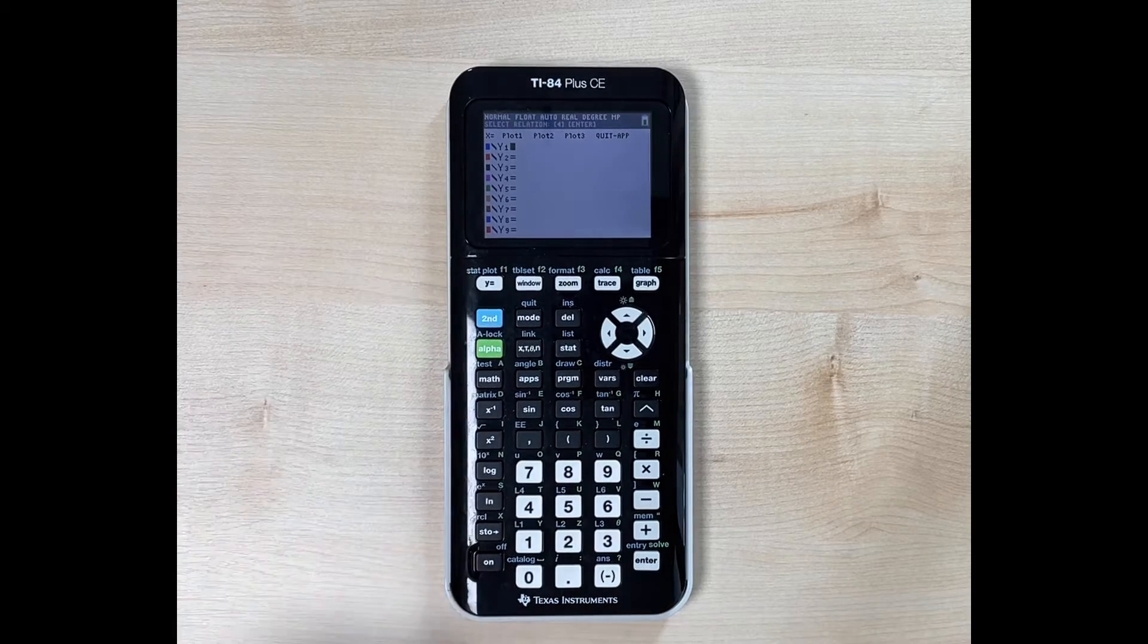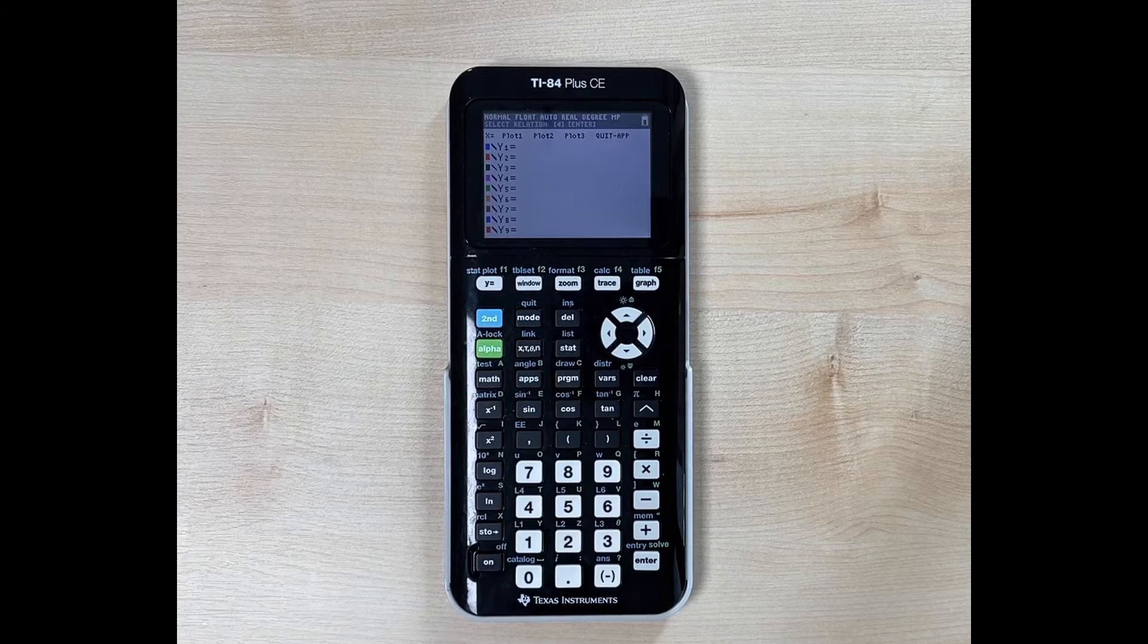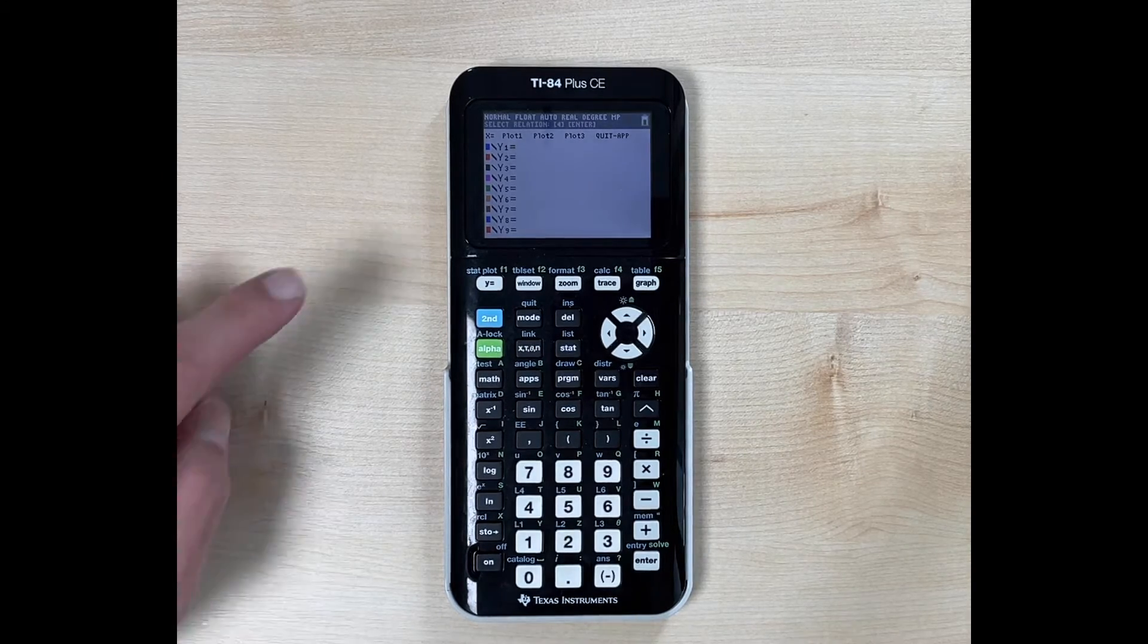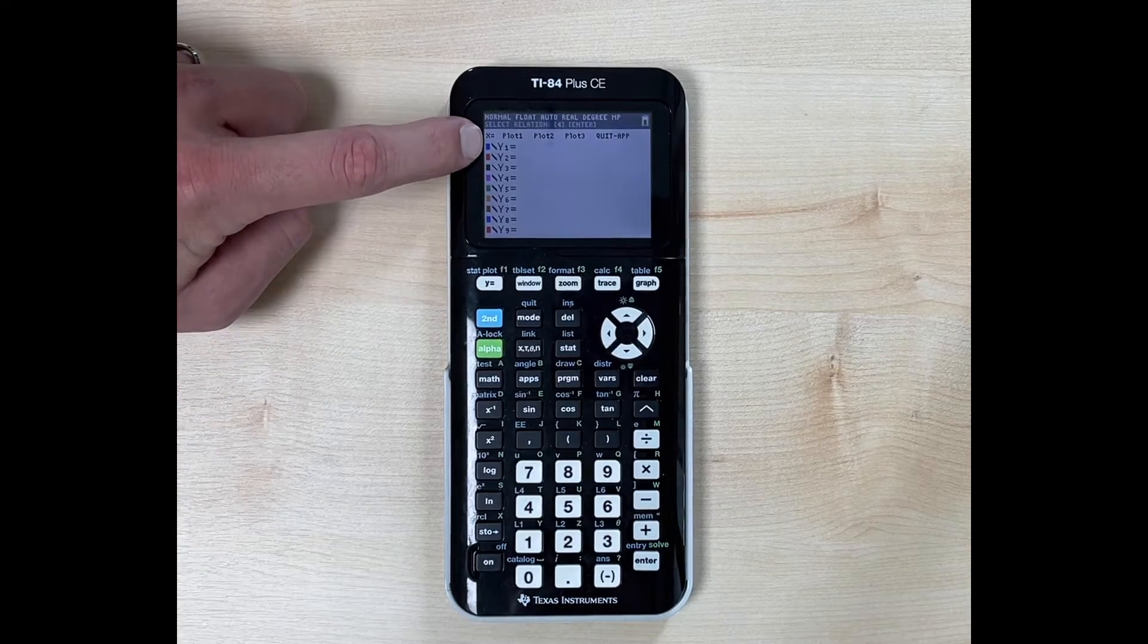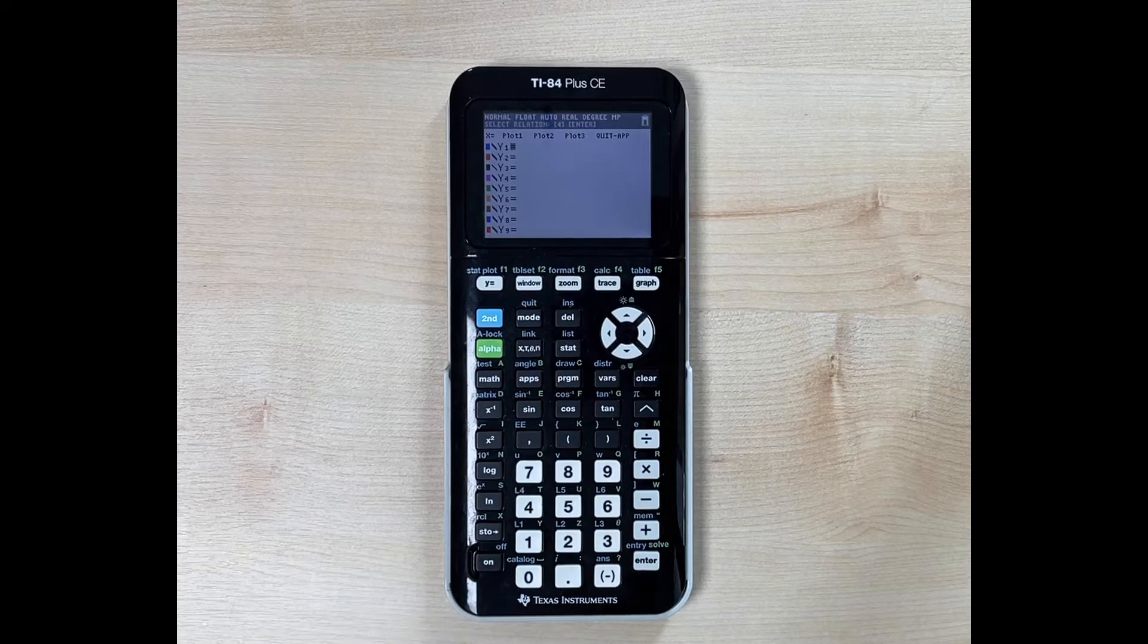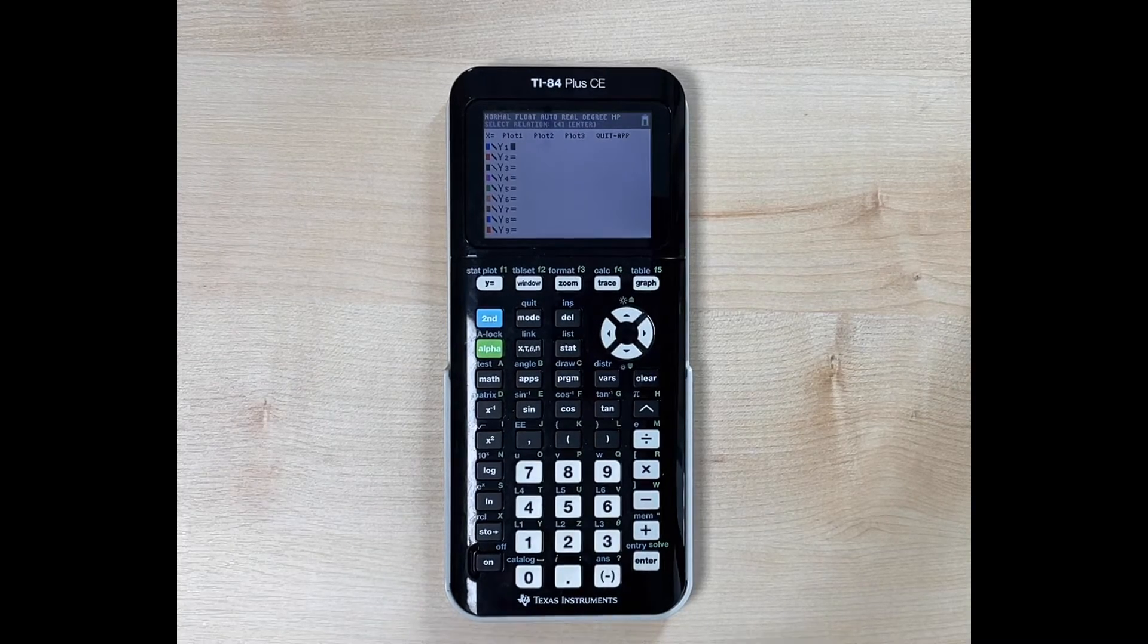This is called the y equals screen. So we have to add an additional application to our calculator for us to be able to graph an x equals line. So if you notice at the top of mine, at the top left-hand corner of the y equals screen, you see x equals. If your calculator has that right now, there's really nothing else you need to do. This application has already been added for you.